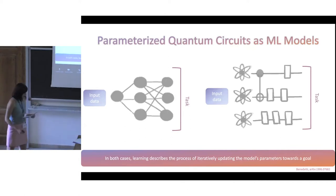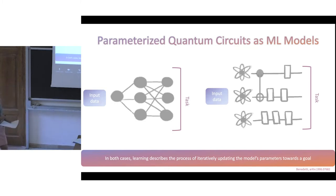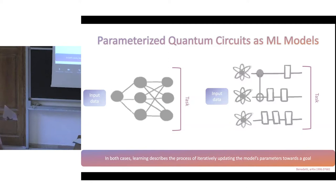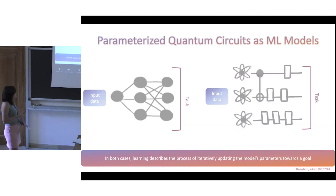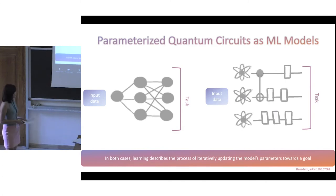For the remainder of this talk, we'll discuss how to think about parameterized quantum circuits as machine learning models. Most of today's discussion is based on the manuscript by Benedetti et al. In this context, we think about variational circuits as machine learning models by drawing on similarities with classical neural networks: you have some input classical data, a target task — classification, clustering, generative modeling — but here we replace the neural network with a parameterized quantum circuit, whose rotational parameters are updated and optimized toward a specific goal.